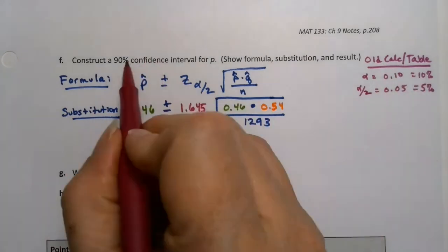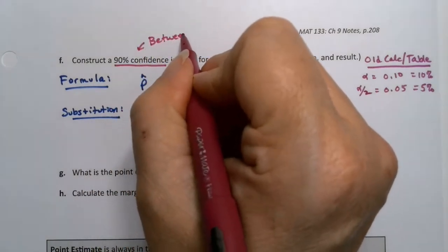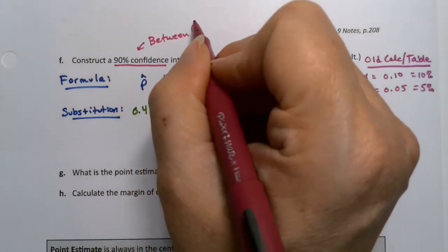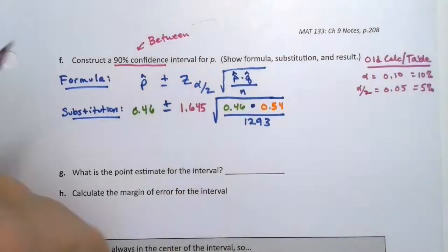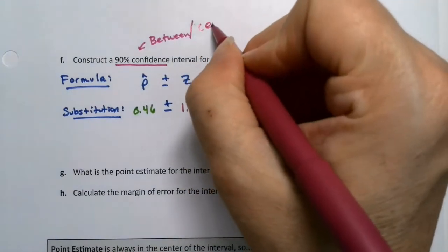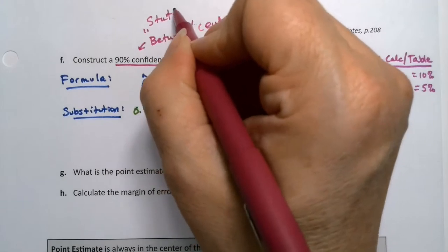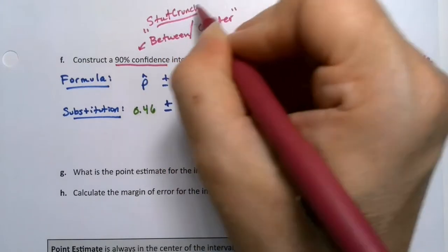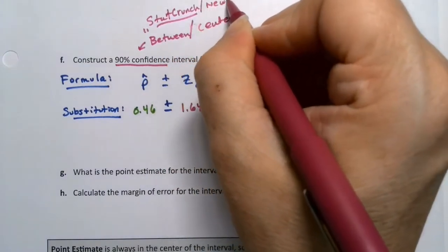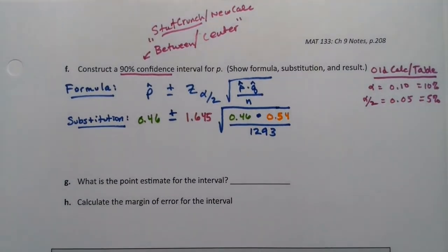You don't have to really do this work unless you're having an old calculator at the table. If you have a new calculator or StatCrunch, you can just put this in the middle, right? Or center, I guess I should say. So it's between on StatCrunch. It'll call it between. And then on your calculator, it says center. So StatCrunch or new calc. It's new. You can have new calculators that don't have it. I shouldn't really say it like that. It's like a new calculator, but it's a particular operating system that it has.